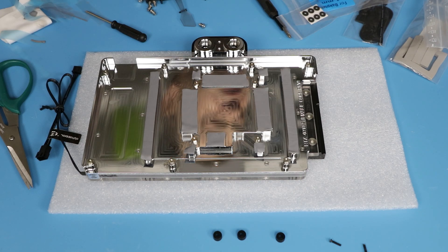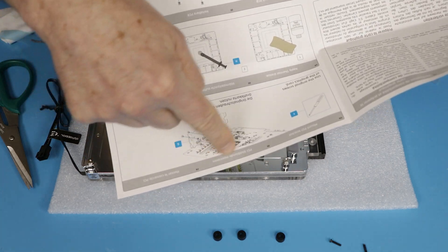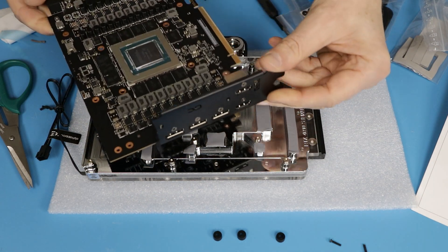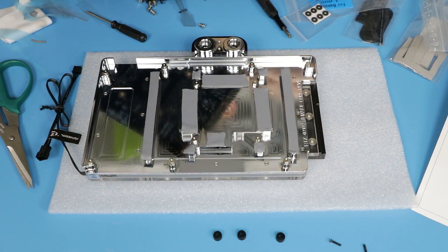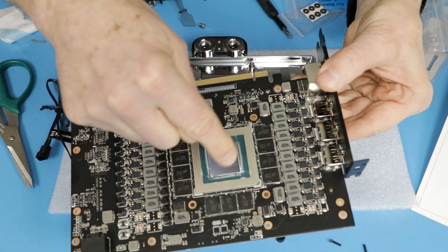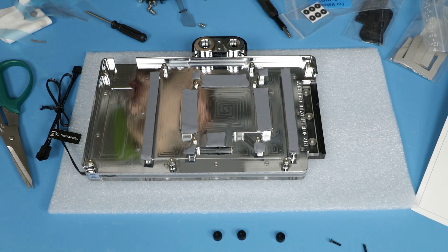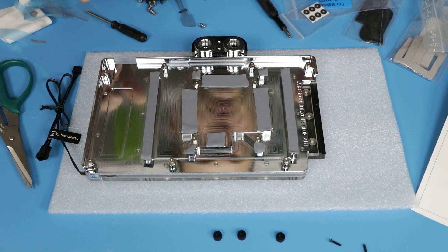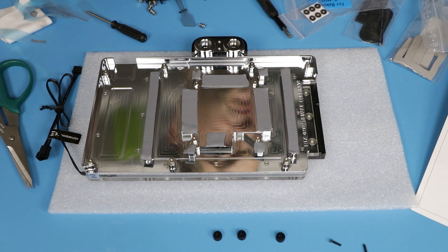So the next step is going to be installing the bracket on the GPU itself, like this. You can see, hopefully still in focus, and apply, clean and apply thermal paste on the chip itself. Then we can lower this PCB on the block, screw it on, and continue with installation with the backplate.